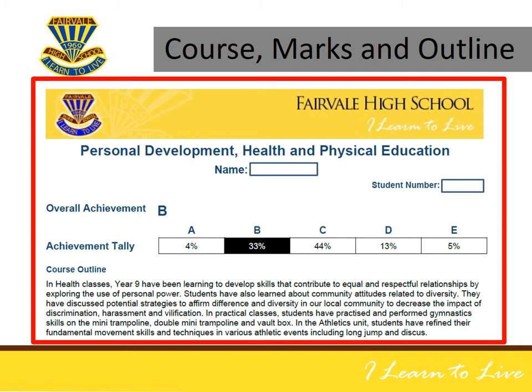The section of the report shown by a red border shows you the top section of what a report looks like at Fairvale High School. We can see the course name, the student name and the student number in blue writing. In this particular example, this student is studying Personal Development, Health and Physical Education.